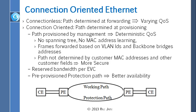The advantage of connection-oriented Ethernet is that you can now guarantee bandwidth. Because the connection is set up at 100 megabit, you can send at 100 megabit and it will get through. If you do connectionless, there might be a queue where it runs into congestion and you don't get 100 megabit. With connection-oriented, you have guaranteed reservation in every queue.